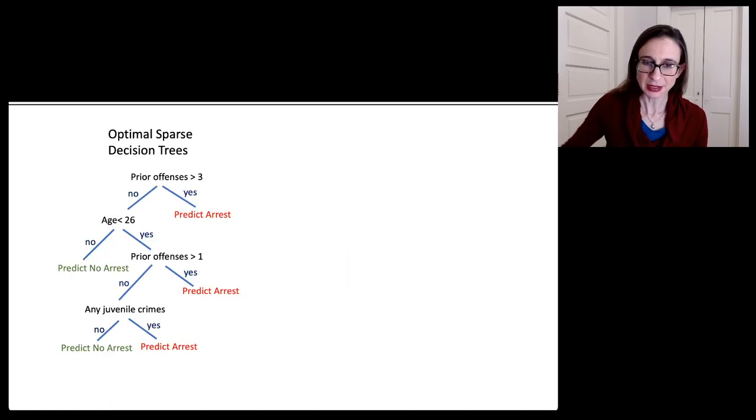So here's an example of the kind of models that my lab constructs. We have a long term project on optimal sparse decision trees. So this is an example of a decision tree where you follow the conditions like it's a logical model. So if prior offenses is not greater than three and age is not less than 26 you go to the left. Right? Predict no arrest.